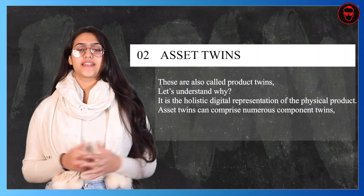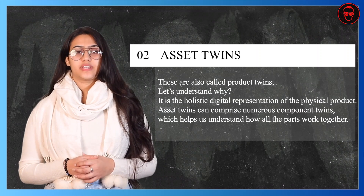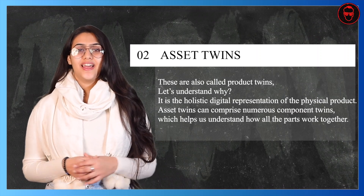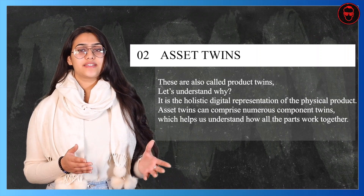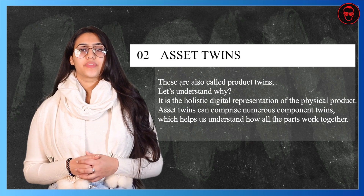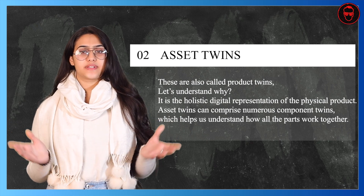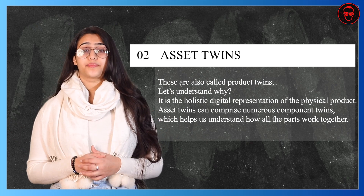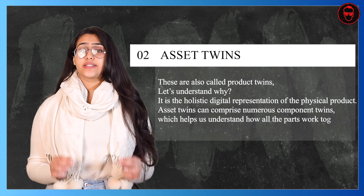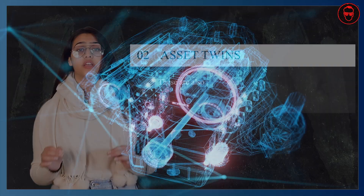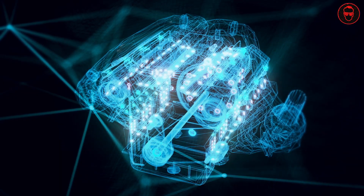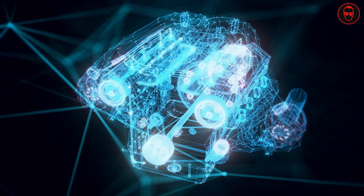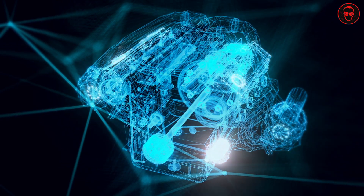Secondly, we have asset twins, also called product twins. It's the holistic digital representation of the physical product. Asset twins can comprise numerous component twins, which helps us understand how all the parts work together.